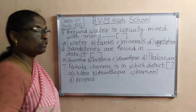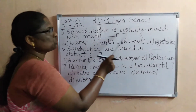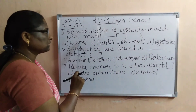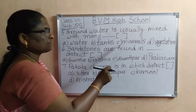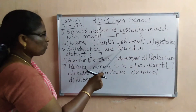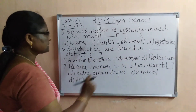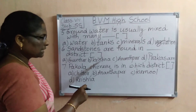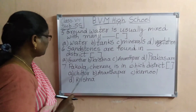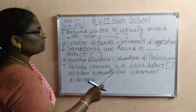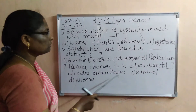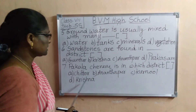Seventh one: groundwater is usually mixed with many dash. Options: water, tanks, minerals, vegetation. Eighth one: sandstones are found in dash district. Options: Guntur, Krishna, Anantapur, Prakasham. Ninth one: Pakalachiru is in which district? Options: Chittoor, Anantapur, Kurnool, Krishna.